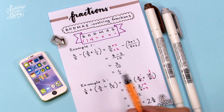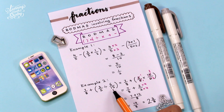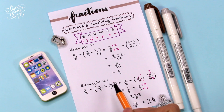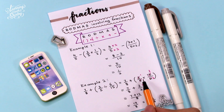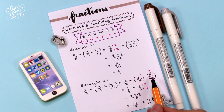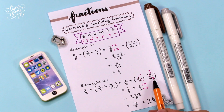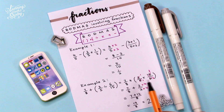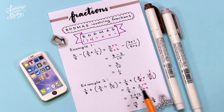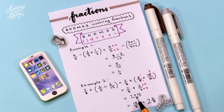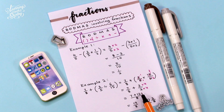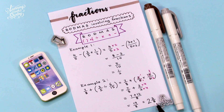Example 2: 7 over 8 plus (3 over 5 divided by 6 over 15). According to BODMAS, we solve the bracket first: 3 over 5 divided by 6 over 15 — change divide to times and flip 6 over 15 to 15 over 6. Cancelling: 3 and 6 become 1 and 2, and 15 and 5 become 3 and 1, giving 3 over 2. Now we add 7 over 8 plus 3 over 2 — changing 3 over 2 to 12 over 8 (multiplying by 4). Then 7 plus 12 over 8 equals 19 over 8, which converts to the mixed number 2 and 3 over 8.